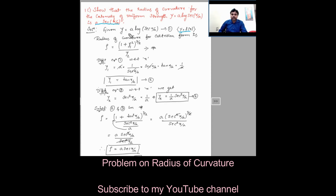To find y1, differentiate equation 1 with respect to x. dy/dx = y1 = a · (1/sec(x/a)) · sec(x/a)·tan(x/a) · (1/a), applying the chain rule. Here, a and a cancel, and the secant terms cancel, leaving y1 = tan(x/a). Name that as equation 2.